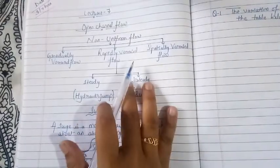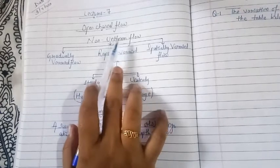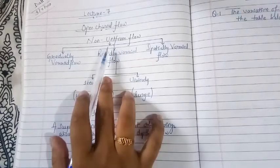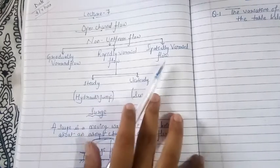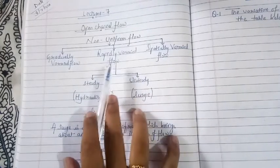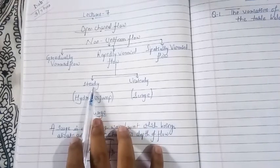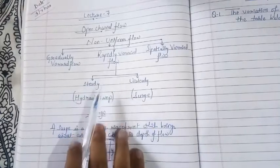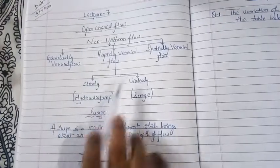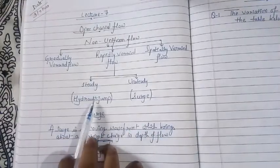Welcome back to my YouTube channel. In the previous lecture we covered what is a non-uniform flow and we saw the classification: gradually varied flow, rapidly varied flow, and especially varied flow. The rapidly varied flow is sub-categorized into steady flow and unsteady flow. The steady non-uniform rapidly varied flow is called the hydraulic jump, and the unsteady non-uniform rapidly varied flow is known as the surge.